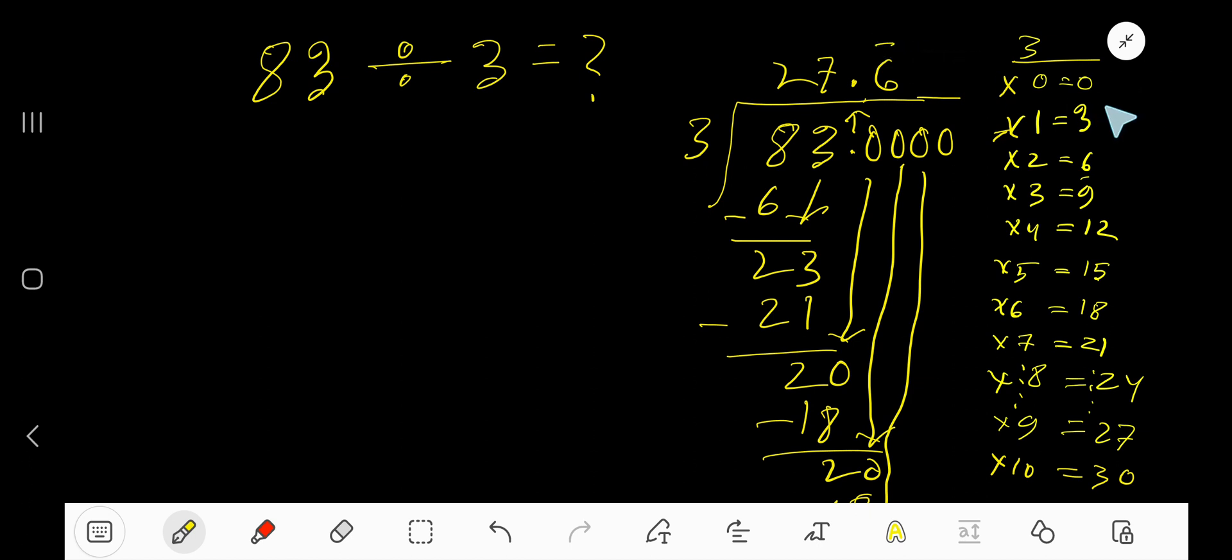This bar over 6 means this 6 is repeating. 0 6 is repeating, 0 6 is repeating, 0 6 is repeating.